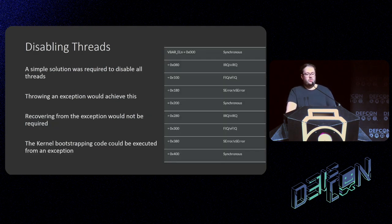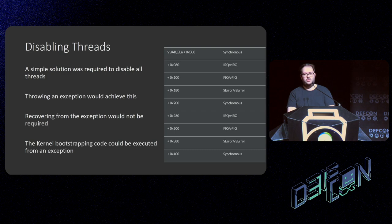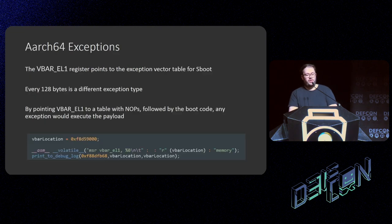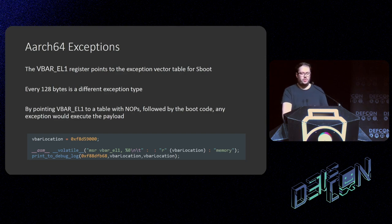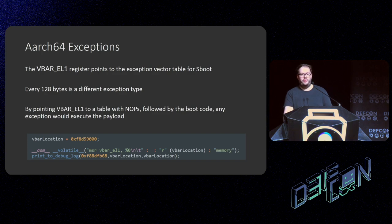A simple solution was to throw an exception. When you throw an exception, all threads hang waiting because they're usually doing something timing- or security-critical. Recovering from the exception wouldn't be required because we were trying to execute the kernel, which would then resettle the exception registers. `VBAR_EL1` — the register that points to a table in memory including sequences of different exceptions stored in 128-byte chunks — I ended up doing a NOP sled throughout the entirety of the exception table into my bootstrapping code at the end of memory, which was then executed.